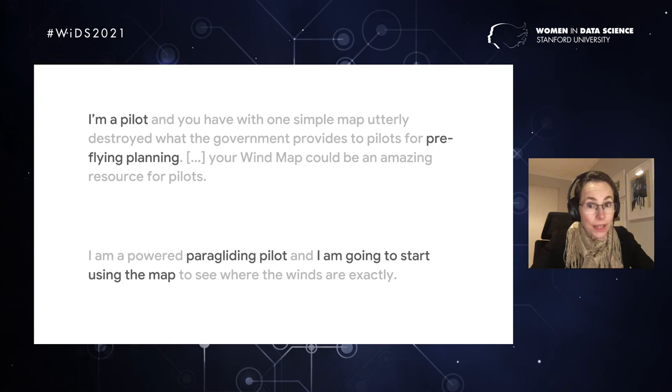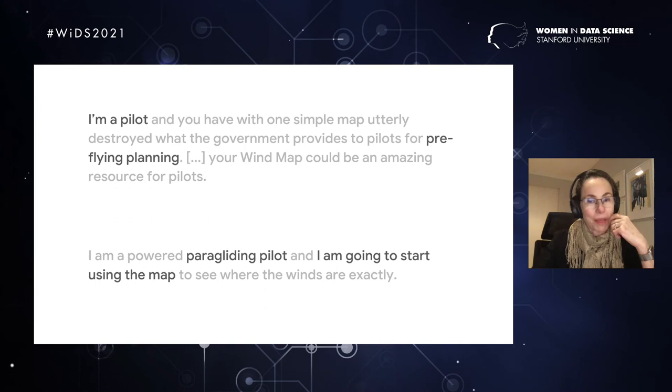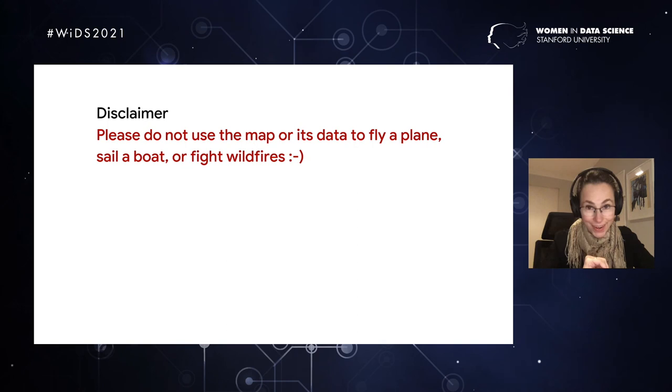We started getting emails from both commercial and military pilots that look at the wind map before they fly their planes, to which we said, Oh, no, no, no, no, do not use the wind map. We literally put a disclaimer on the website that said, do not use the wind map or its data to fly a plane, sailboat, or fight wildfires. We were scared because people were using this for real. After we put the disclaimer, we started getting emails like this one. They said, yeah, yeah, yeah. I see your disclaimer, but please respect the power of visualization in promoting prevention of wildfires.